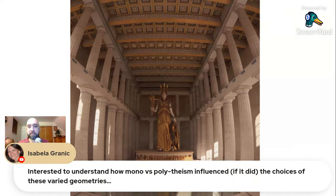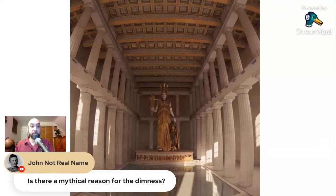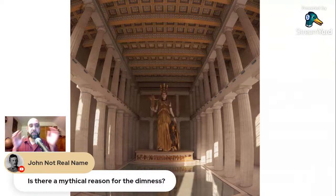One question from the chat: how did monotheism versus polytheism influence the choices of these varied geometries? My instinctual response is: surprisingly little. You actually see a lot of the same ideas and layouts repeated and just adapted from polytheistic religions into Christianity. On the dimness of the Parthenon interior — we really don't know, since there may have been a skylight. The statue was covered in gold, which would shine forth dramatically with even very dim light, so dim lighting would have made a lot of sense.